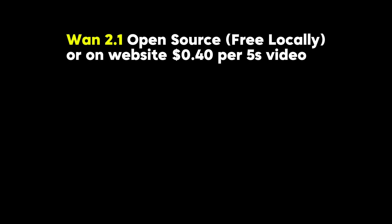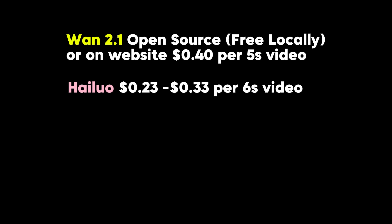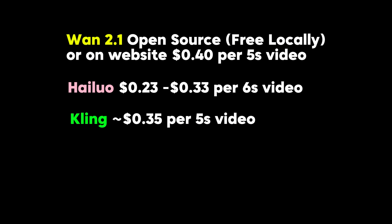As far as the cost breakdown goes, Wan 2.1 is open source so you can run it for free. You'll need around 8GB of VRAM, but to run it on a website like fal.ai, it costs around 40 cents for a 5-second video. Hailuo has an unlimited plan on the website, but for the cheaper plans it costs 23 to 33 cents. Kling doesn't have an unlimited plan unfortunately, and also costs around 33 cents for a 5-second video.